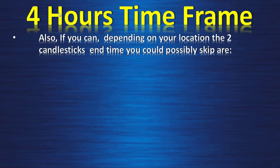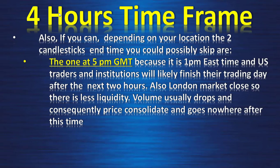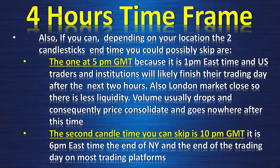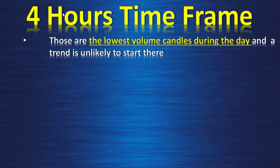Also, depending on your location, two candle times you could possibly skip: the first is 5 p.m. GMT (1 p.m. Eastern), because US traders and institutions will likely finish their trading day in the next two hours and London has closed — less liquidity overall, volume drops, and price tends to consolidate. The second candle time you can skip is 10 p.m. GMT (6 p.m. Eastern), which is the end of the New York market and the lowest-volume candles of the day — a trend is unlikely to start there.